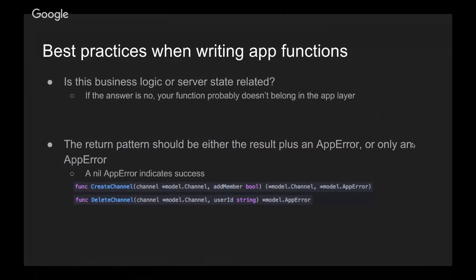Some best practices when writing app functions. The first question to ask yourself is: is this business logic related or server state related? If the answer is no, your function probably doesn't belong in the app layer — it either belongs as a function within your current package, or in a utility package somewhere. Business logic or server state related? Probably app layer. Otherwise, probably not, though we can deal with exceptions on a case-by-case basis.